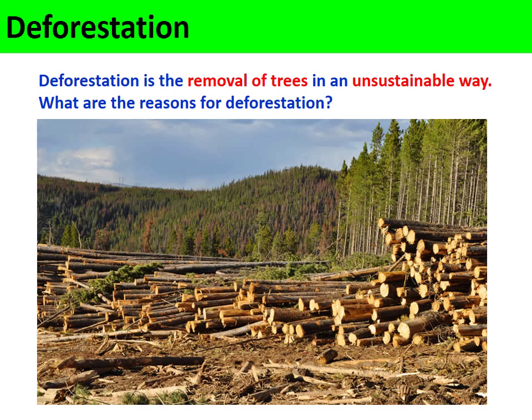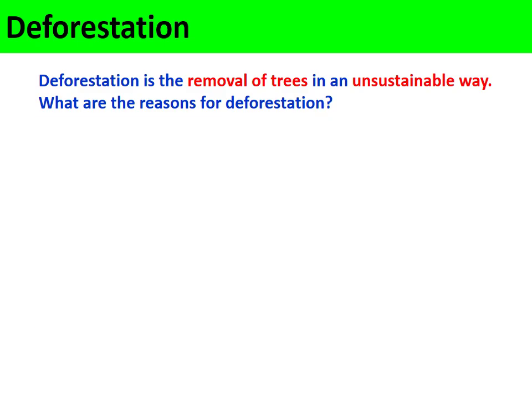One of the impacts of human activity on the environment is through deforestation. Deforestation can be defined as the removal or felling of trees in an unsustainable way. If a large area of forest is cut down and the trees are not replanted and do not regrow, it is unsustainable because the forest is being damaged and destroyed over time. So what are some of the reasons for deforestation?